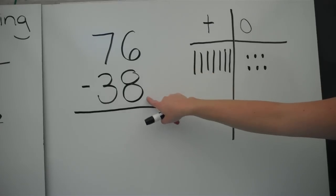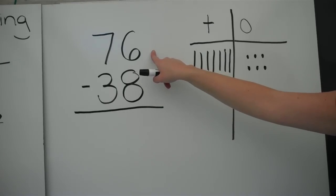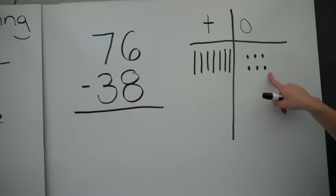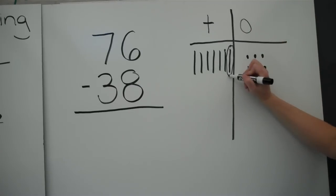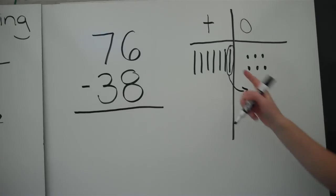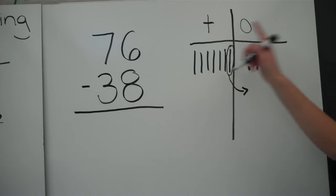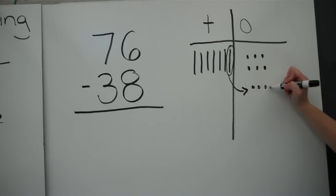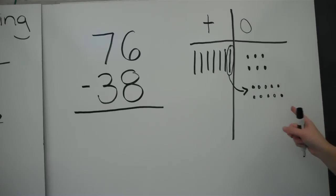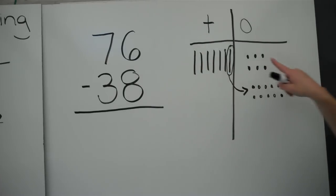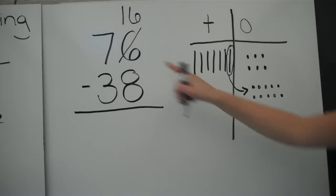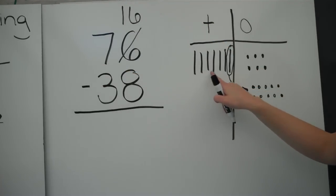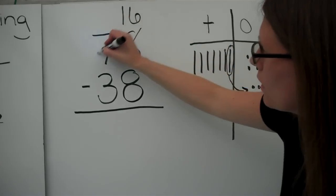Now I need to take eight ones from six, but I can't because I only have six. That's why I need to regroup. I'm going to take a ten and put it over into the ones column — I'm trading that ten for ten ones. Now I don't have six ones, I have six plus ten, which is sixteen ones. And I no longer have seven tens — I have six tens.